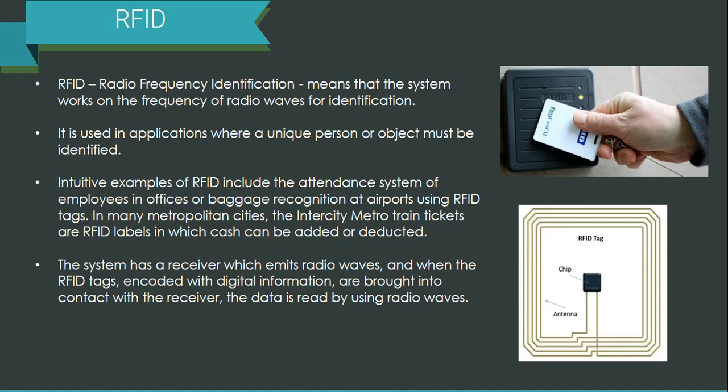RFID stands for Radio Frequency Identification, meaning the system works on the frequency of radio waves for identification. It is typically used in applications where a unique person or object must be identified. We are already using it — identity cards, library cards, and even metro train tickets are RFID labels. When you show the RFID card to the reader, information is automatically detected. The system has a receiver that emits radio waves, and when RFID tags encoded with digital information are brought into contact with the receiver, the information is read by those radio waves.